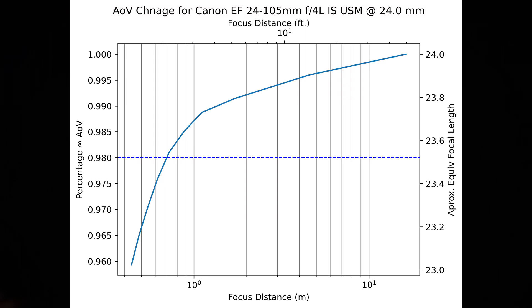Now, starting our tests out at the 24mm zoom position, the total breathing over the entire focus range is about 4%, with the angle of view getting wider as the lens focuses closer to the camera. Now, that said, given that some breathing can be acceptable, I also look at what I call the 2% threshold. This is where the angle of view has changed by 2% from the infinity focus position. At 24mm on this lens, that happens at around 2.3 feet or 0.7 meters.